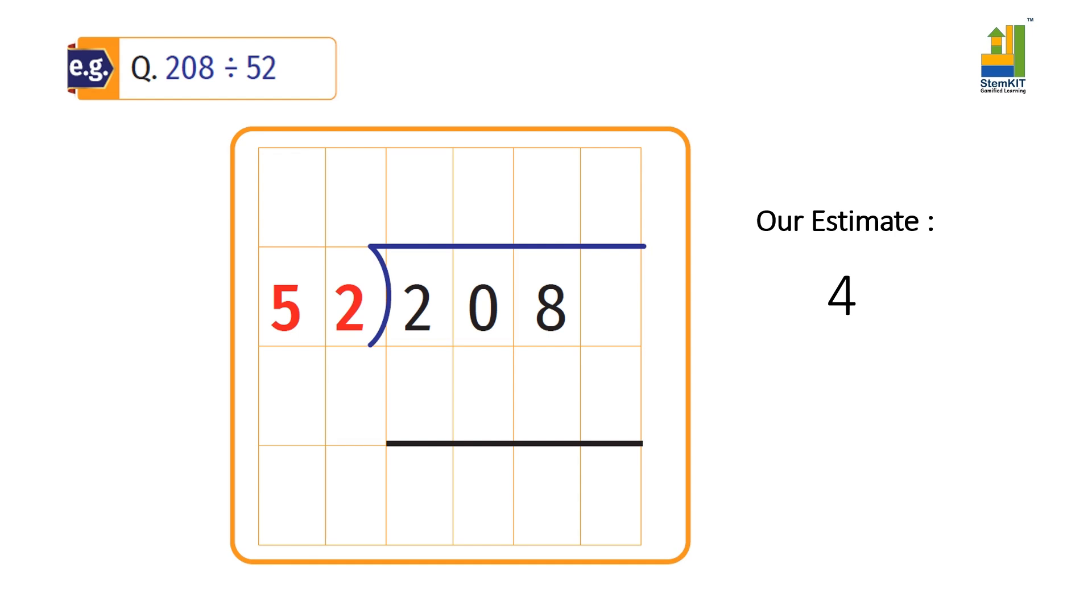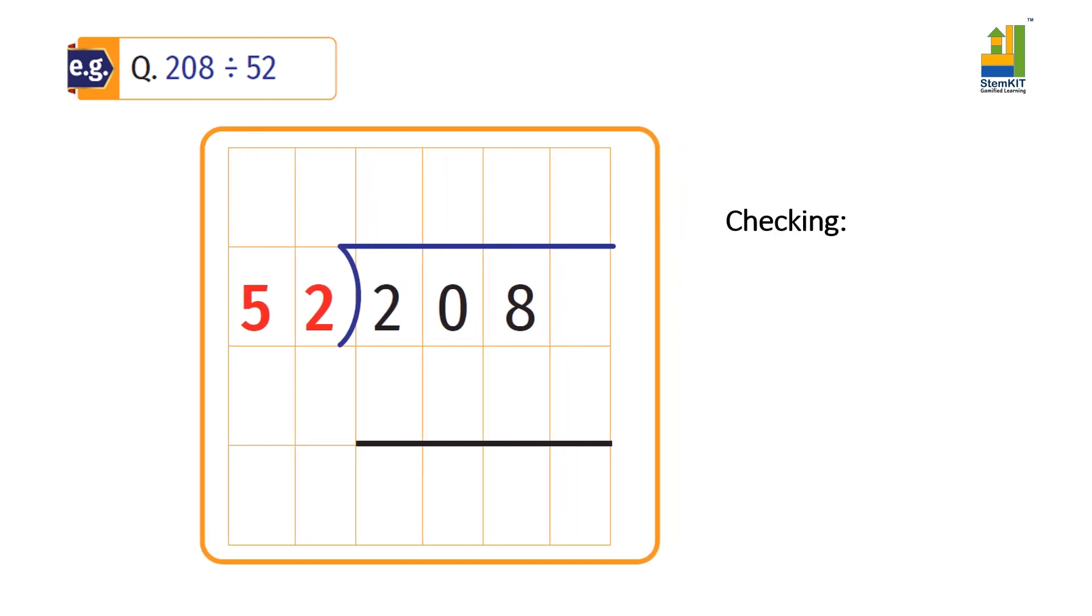We check this estimate by multiplying 52 by 4. The answer must be less than the dividend.